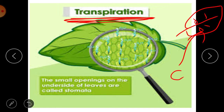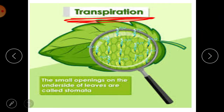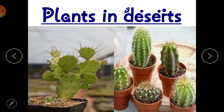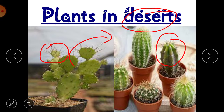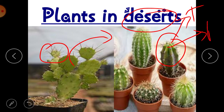In plants found in deserts, they have no leaves because in deserts there is already a scarcity of water. If leaves lose water by the process of transpiration, the plants would need more water. So these plants either have no leaves or very few leaves. In some plants, leaves are modified in the form of spines. There are two purposes of spines: number one is to avoid transpiration, and the other is to protect the plants from being eaten by animals.